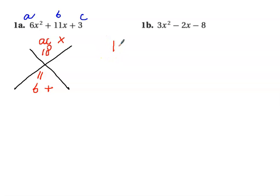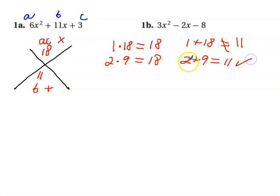Let's see, if I multiply 1 times 18, I will get 18, however 1 plus 18 does not equal 11. So we're going to try different numbers. Let's say 2 times 9 equals 18, and 2 plus 9 does equal 11. So we can see that those two numbers would work. I'm going to write here in a different color, 2 and 9.